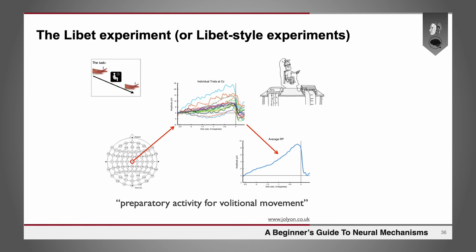What Libet did was ask people, at the same time they were doing this task, to look at a clock with a spot moving around and to report where the spot was at the time when they decided or willed to move their finger or wrist — and looked at the timing relative to this ramp of activity that precedes movement. What they found is that the time at which they identified the moment of willing — or W time — was about 500 milliseconds before the movement, but several hundred milliseconds after the beginning of the rise of this ramp of activity. So Libet interpreted his experiment to show that the brain decides to will before you are conscious of willing, and that our consciousness of willing is really epiphenomenal.